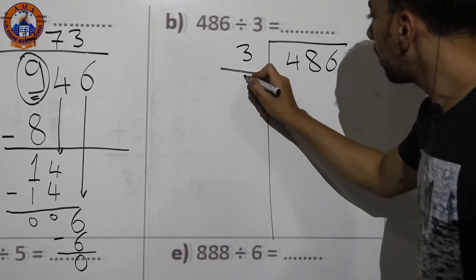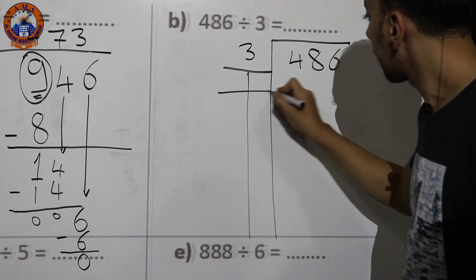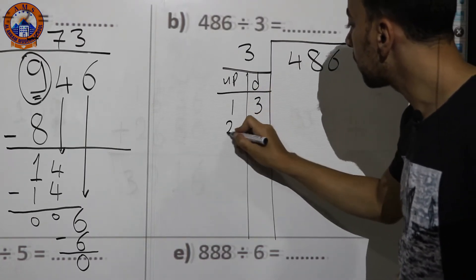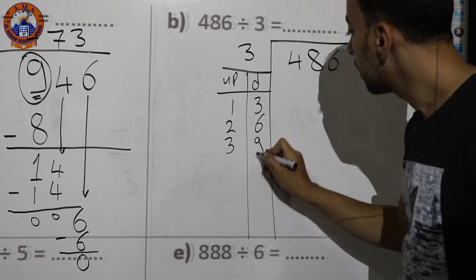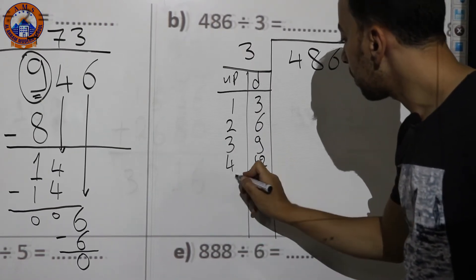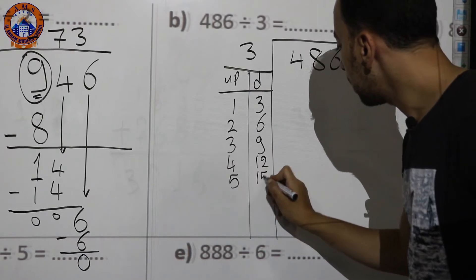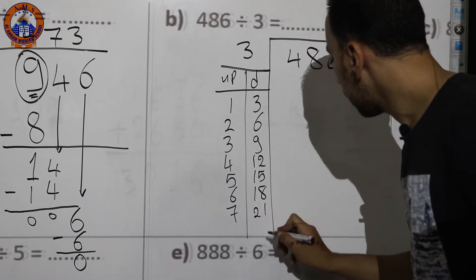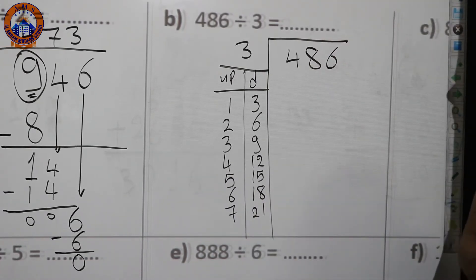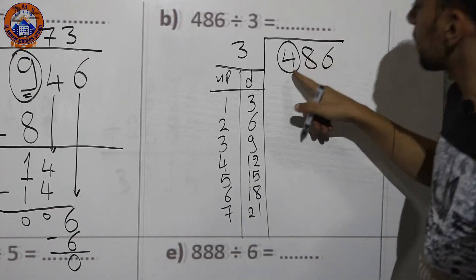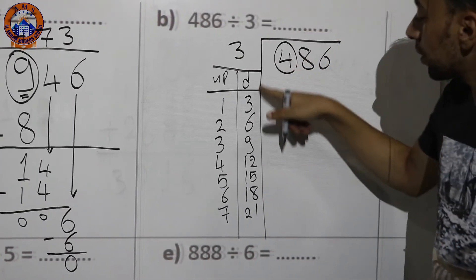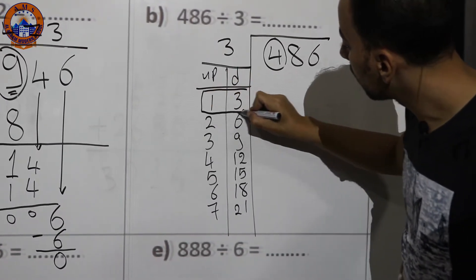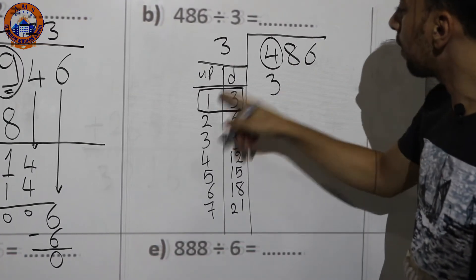Next example: 486 divided by 3. Here is the long division sign with 486 inside and 3 outside. I'll write the times table of 3: 3×1=3, 3×2=6, 3×3=9, 3×4=12, 3×5=15, 3×6=18, 3×7=21. Taking the first digit 4 — it's not in the table, but the nearest number is 3, so I put 3 down and 1 up.